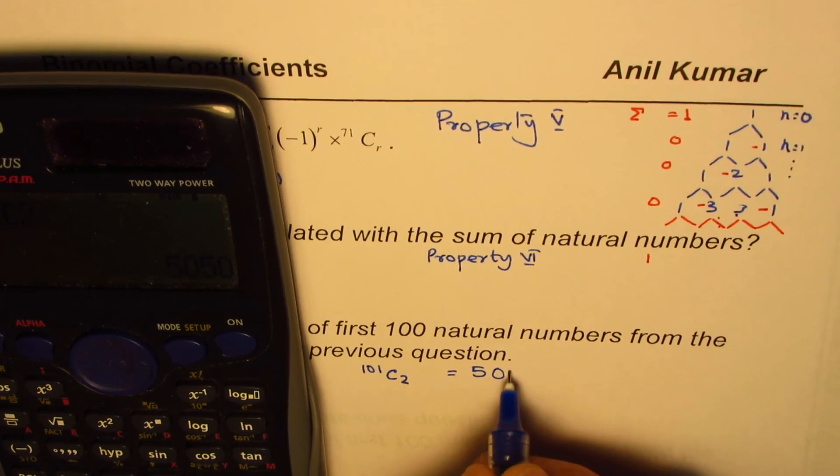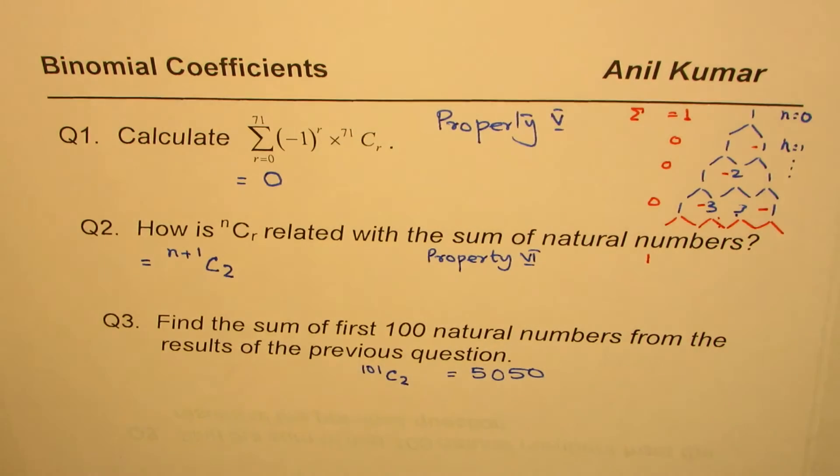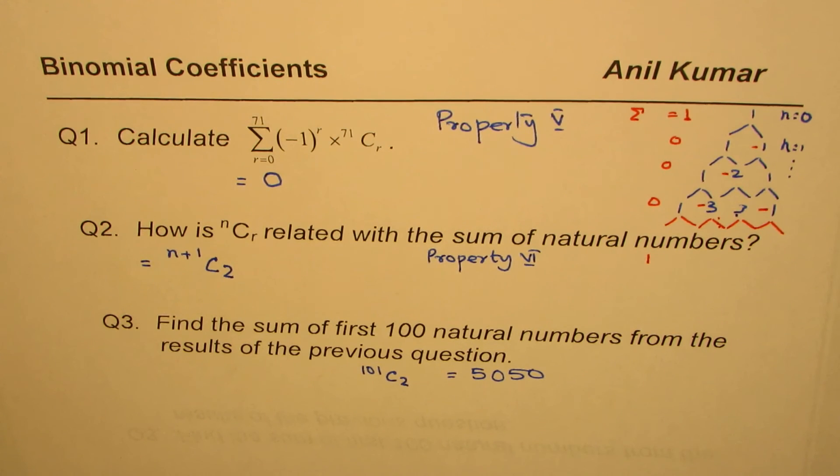So we get 101C2 as the answer. We can use calculator to find 101C2 gives us 5050. So that is the result, 5050 is the sum of first 100 terms. So that is how we can apply these properties of binomial coefficients, I should say Pascal's triangles, and solve these questions.